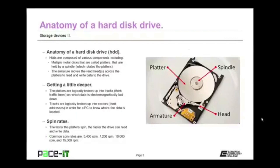Getting deeper into the anatomy, the platters are logically broken up into tracks — think traffic lanes — in which data is electromagnetically laid down. The tracks are logically broken up into sectors — think addresses — so the PC knows where the data is located. The faster the platters spin, the faster the drive can read and write. Common spin rates range from 5,400 RPM up to 15,000 RPM. In the consumer market, you're more likely to see 5,400, 7,200, or 10,000 RPM. In the enterprise market, you're much more likely to see 10,000 or 15,000 RPM.